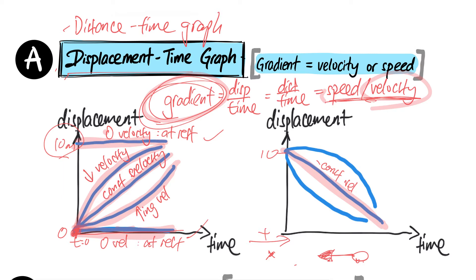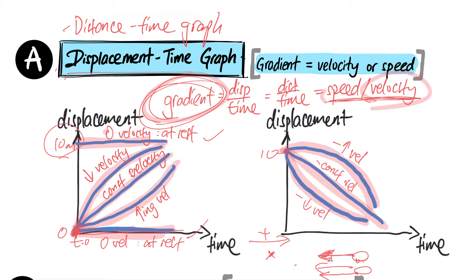For a curve that goes downward and gets steeper and steeper, that's a negative increasing gradient — meaning the object is going faster and faster in the negative direction. For a curve going downward that gets less and less steep, that's a negative decreasing gradient — the object is moving back in the negative direction but with decreasing speed.